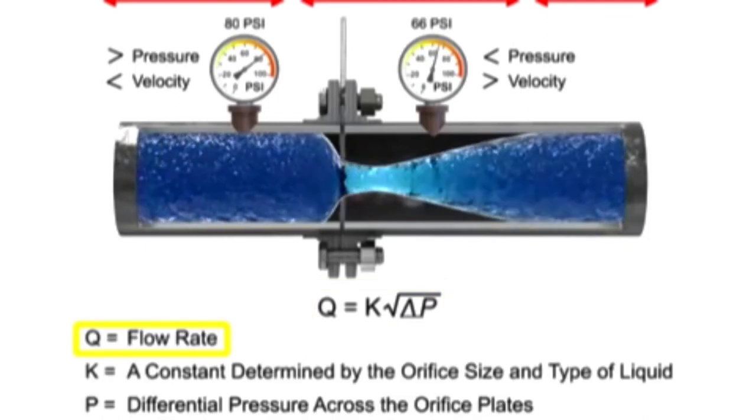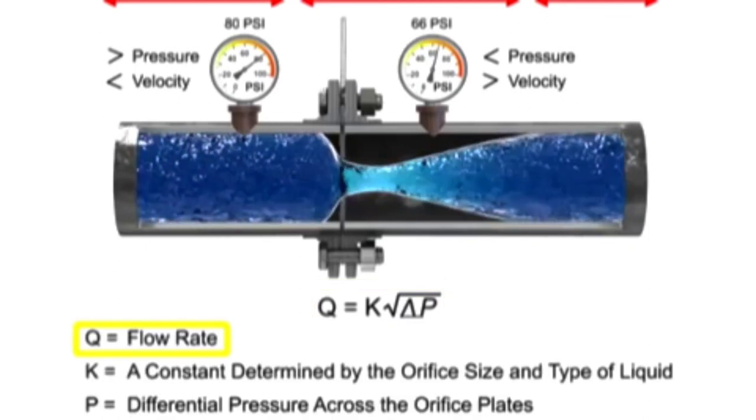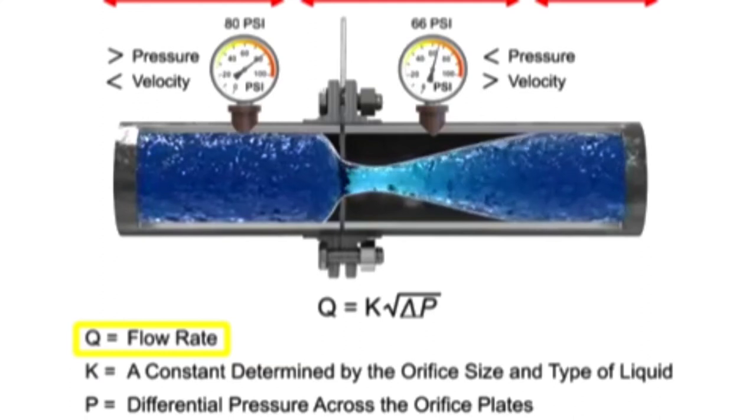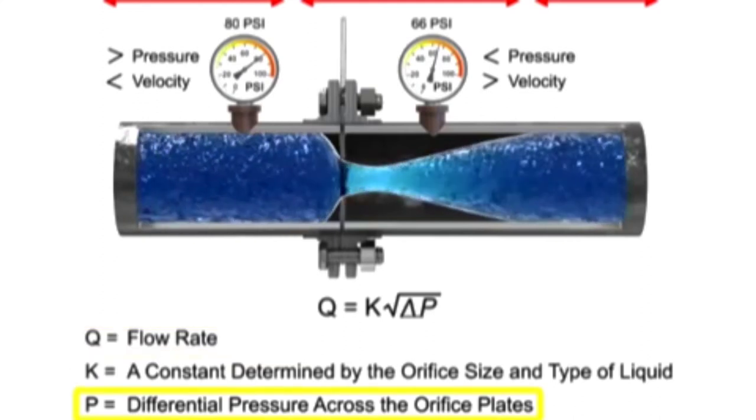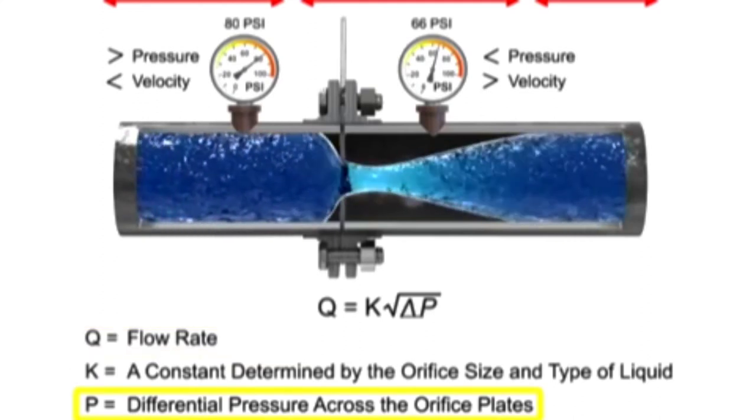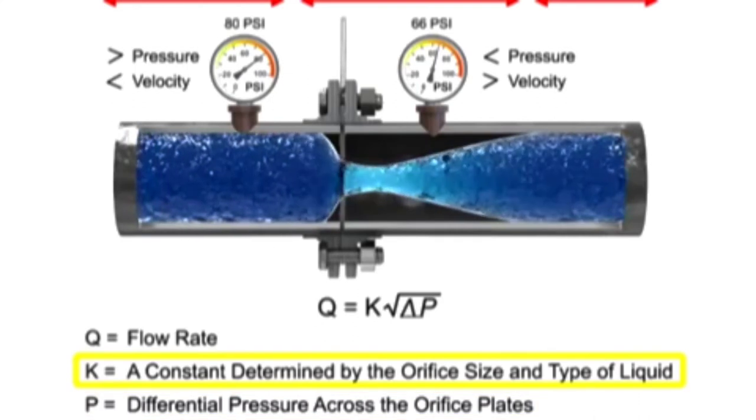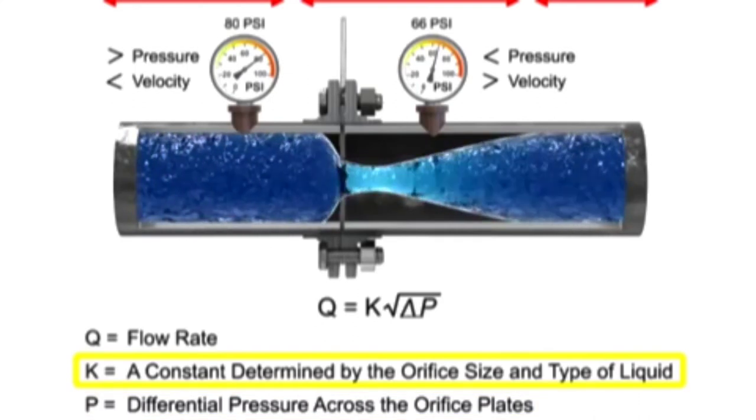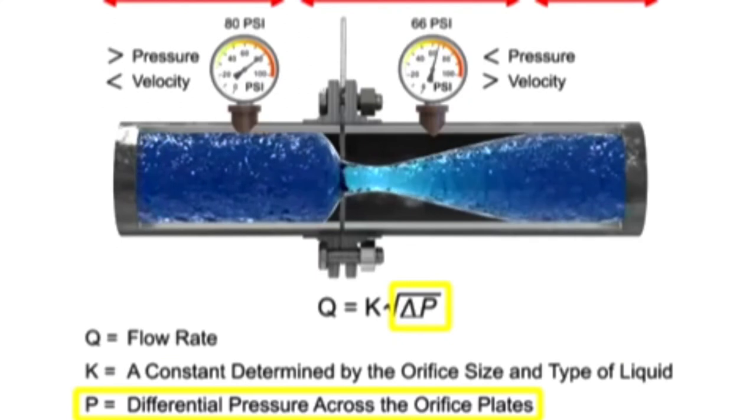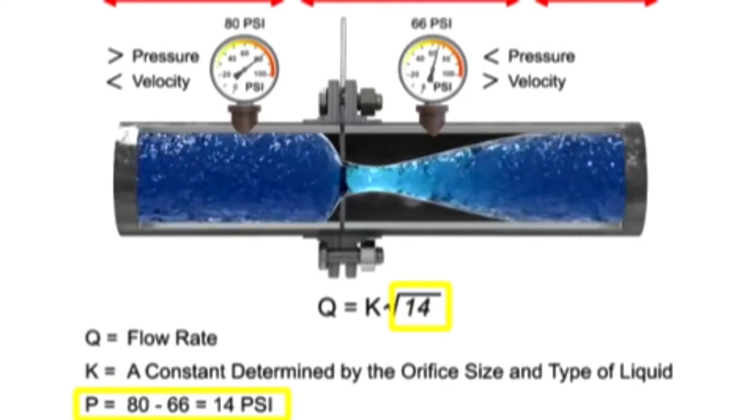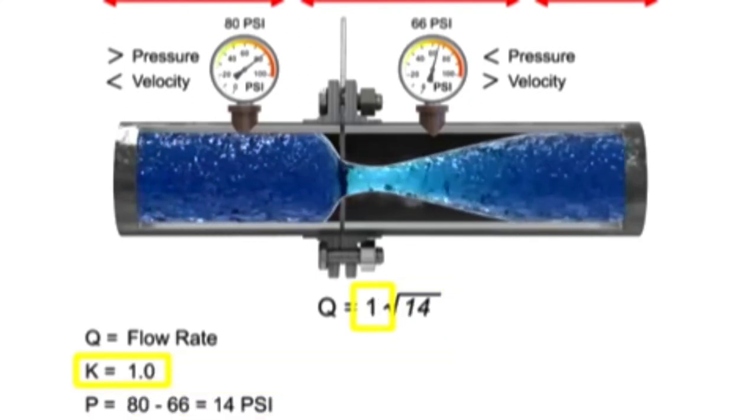The flow rate, Q, of a fluid through an orifice plate increases in proportion to the square root of the pressure difference on each side multiplied by the k-factor. For example, if the differential pressure increases by 14 psi with a k-factor of 1, the flow rate is increased by 3.74.